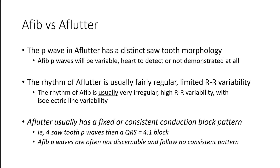Breaking down the difference between AFib and AFlutter: the P-wave in AFlutter has that distinct sawtooth morphology. In AFib, these aren't even really P-waves — they're flutter waves or fibrillation waves — and you might not even detect any activity at all. The rhythm of AFlutter is usually fairly regular; you usually have two, three, or four sawtooth waves before a QRS complex. There is no regularity whatsoever to AFib — it's all over the place. Very high R-to-R variability and isoelectric line variability. In AFlutter we had that consistent four-to-one pattern, whereas in AFib there's really no SA node setting the pace — it's from ectopic pacemakers.